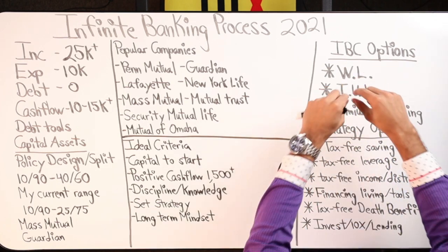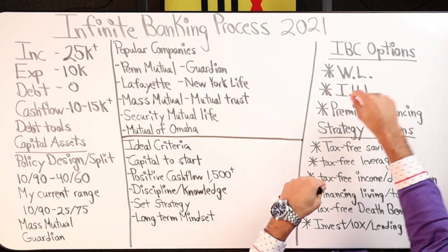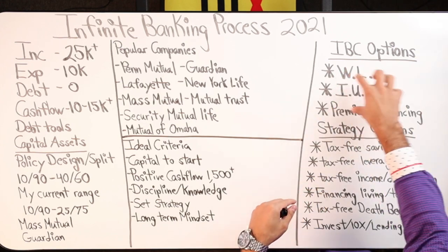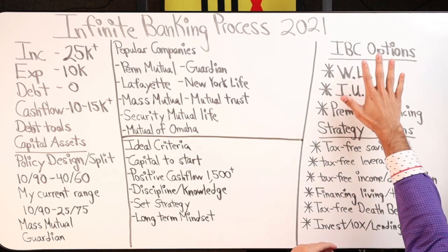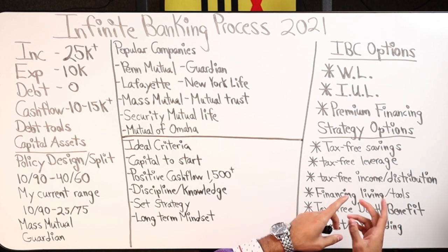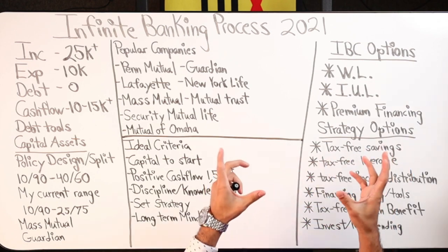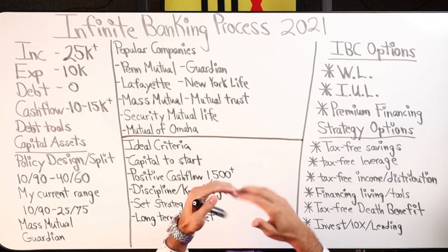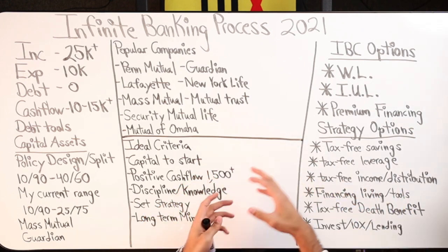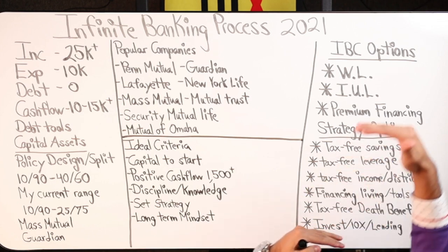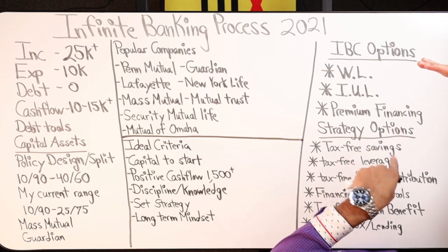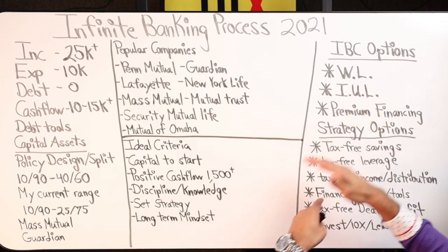There are sub-options within the whole life product, within the IUL, and within premium financing, but these are the three main ones you should be aware of. In a minute or two I'm going to share my screen and open up the options, marketing terms, and terminology. You can take a screenshot or save it — I might even create a PDF you can download, so when you're talking to an agent you have the terms pulled up.